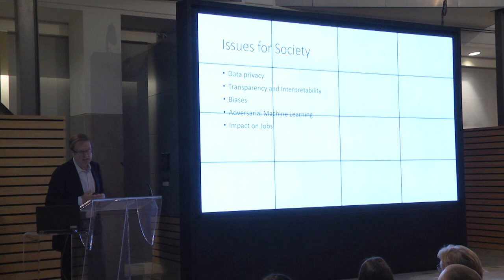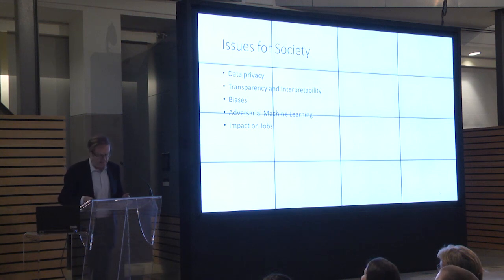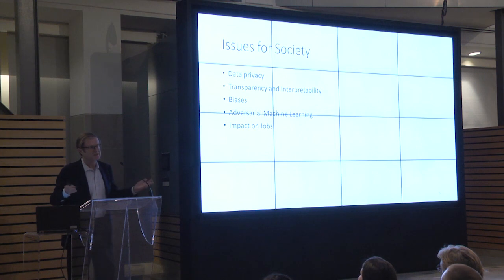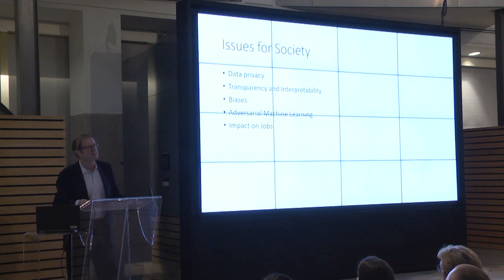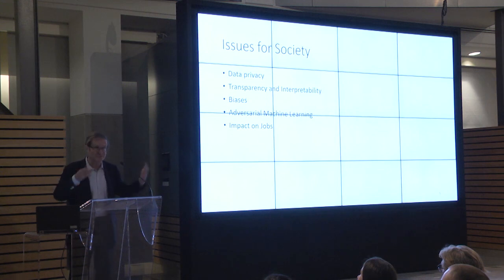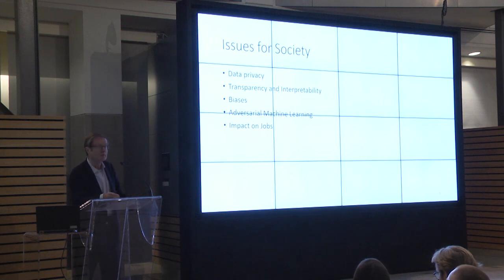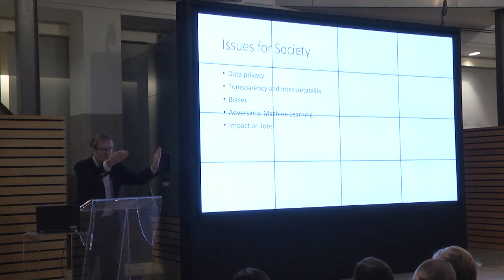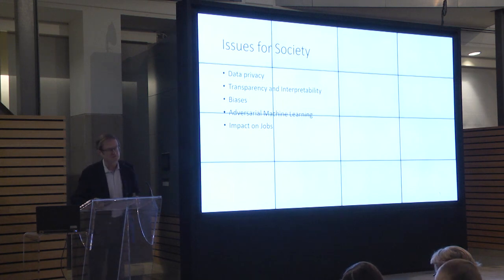Data privacy is one important issue. Machine learning thrives on data — that's why it's called big data. It's been estimated that in any two-year period we generate nine times as much data as existed at the beginning of that period, so the amount of data in the world is growing exponentially. This is great for machine learning, but it creates the problem of who owns the data and raises all sorts of data privacy issues. The European Union has been at the forefront as far as data privacy is concerned.